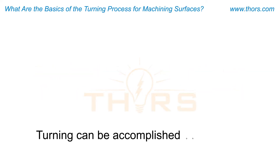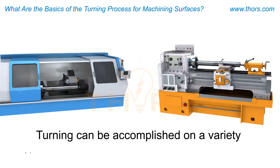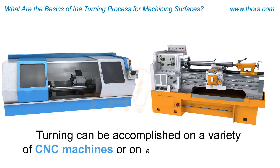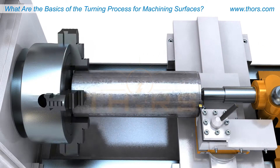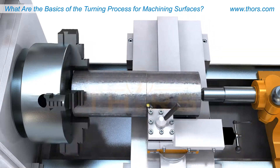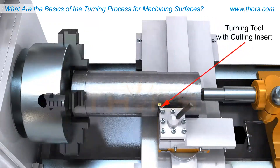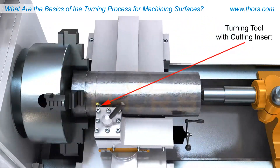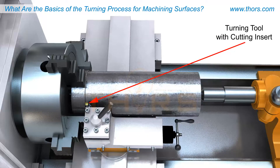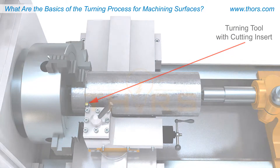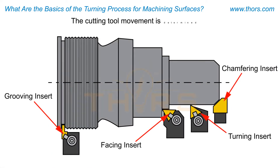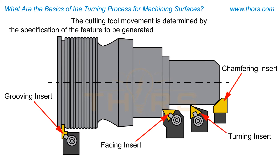Turning can be accomplished on a variety of CNC machines or on a conventional lathe. As the workpiece rotates, the cutting tool moves in a linear direction either parallel to or perpendicular to the axis of rotation of the workpiece. The cutting tool movement is determined by the specification of the feature to be generated and by the position of the workpiece.